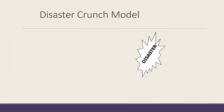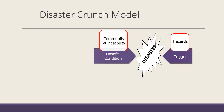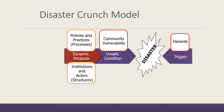A better alternative framework is the disaster crunch model, wherein we recognize that a disaster is the result of a hazard or trigger and an unsafe condition or a vulnerable community. When this trigger hits, a disaster happens. The model also recognizes that unsafe conditions are brought about by dynamic pressures — because of policies, practices, processes, and institutions and actors.